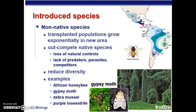Some examples of invasive or introduced species are the African honeybee, the gypsy moth, the zebra mussel, and purple loosestrife — a type of plant also known as kudzu — shown here.